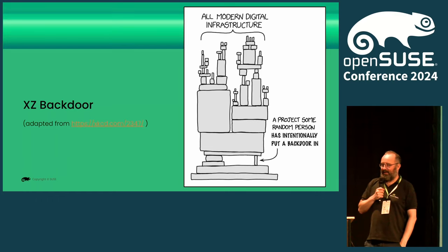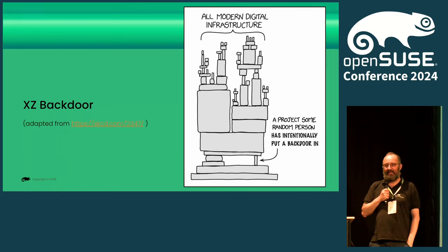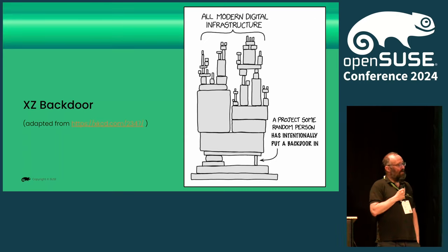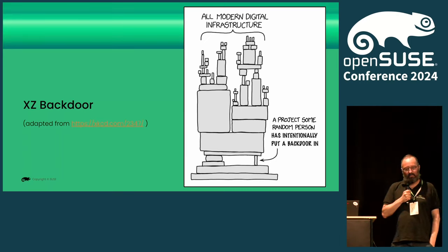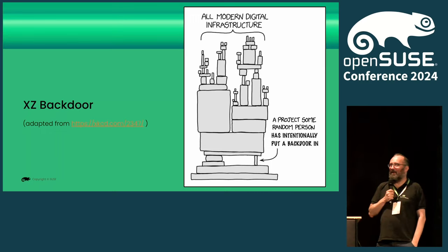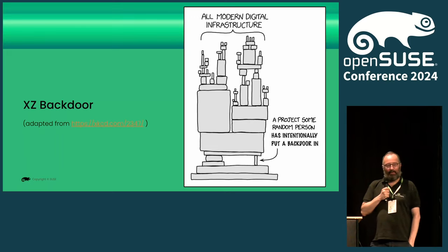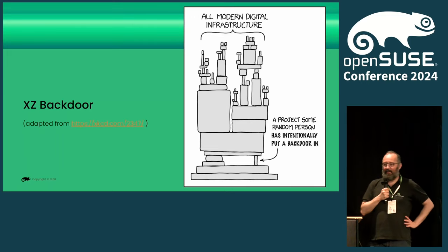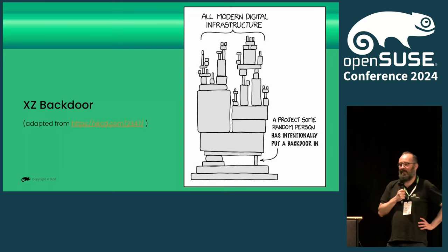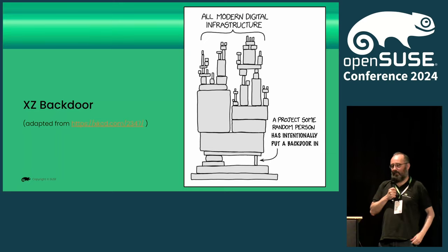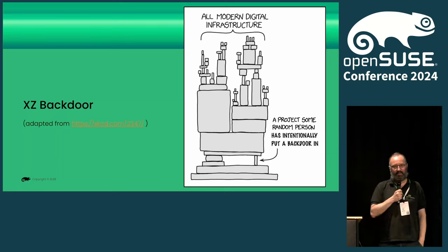No talk about supply chain security like this can avoid the infamous XKCD graphic, here slightly adjusted, showing that we are all built on — or walking on the shoulders of giants, or small pieces of wood in that case. The reality looks even worse; there are small pieces on the basement. Today we'll be talking about the compression library and tool XZ, and it turns out it actually is — or was — such a small piece down there.